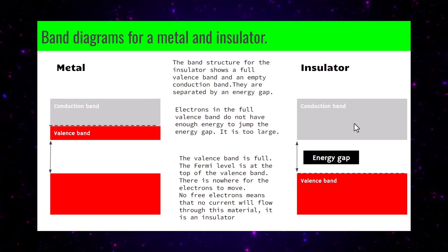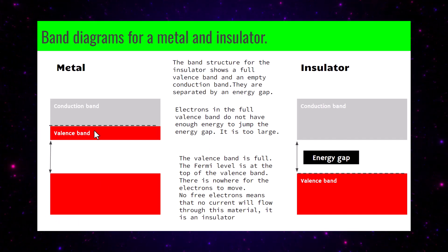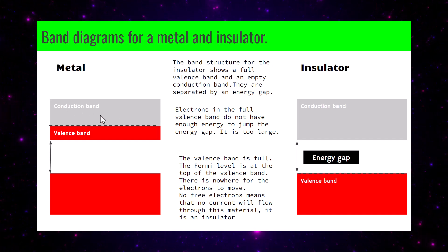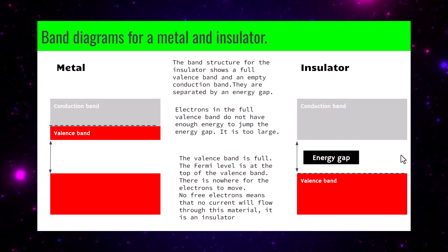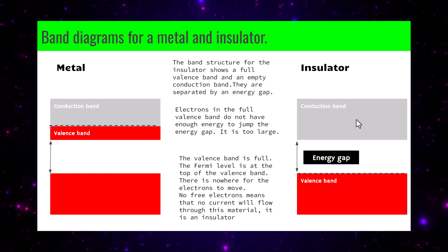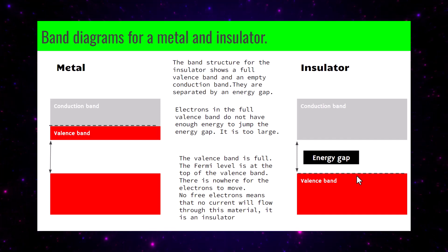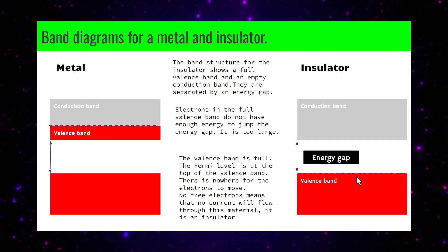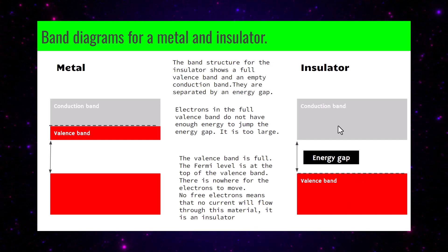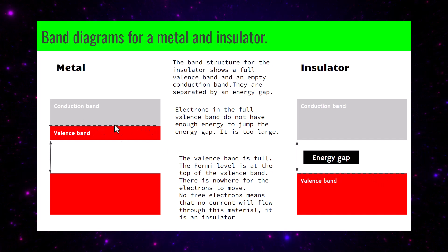Here we have the band structure for a metal and an insulator. For the metal, the valence band has crept into the conduction band and the Fermi level sits inside it — electrons can move about the conduction band quite freely. For the insulator, the valence band is completely filled and stops short, with an energy gap above it leading to the conduction band. These electrons cannot reach the conduction band because of that energy gap, so the Fermi level for an insulator is much lower than for a metal.